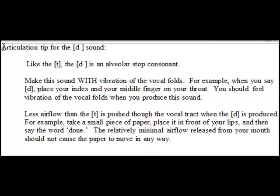Articulation tip for the D sound. Like the T, the D is an alveolar stop consonant. Make this sound with vibration of the vocal folds. For example, when you say d, place your index and your middle finger on your throat — you should feel vibration of the vocal folds when you produce this sound. Less airflow than the T is pushed through the vocal tract when the D is produced. For example, take a small piece of paper, place it in front of your lips, and then say the word 'done.' The relatively minimal airflow released from your mouth should not cause the paper to move in any way.